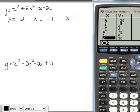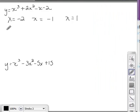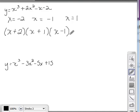So what you can do from there is you can write the factors: the factor for a root of negative 2 is x plus 2, factor for a root of negative 1 is x plus 1, and the factor for the root x equals 1 is x minus 1. So there you have your factored answer.